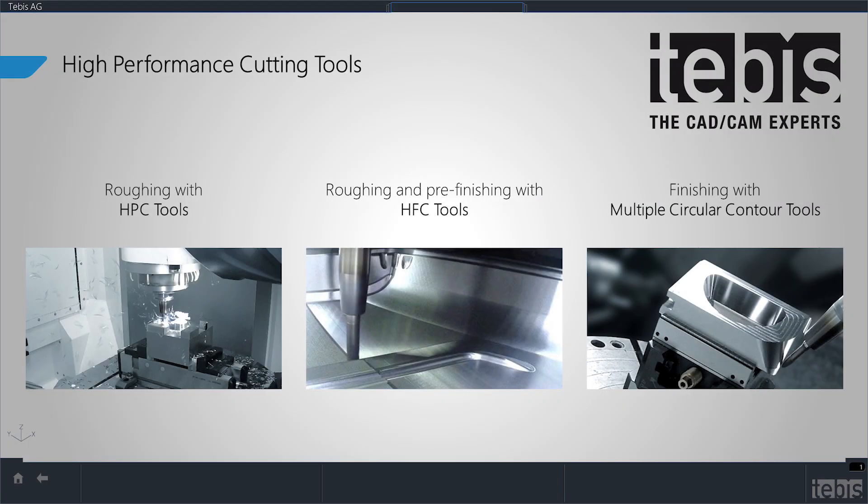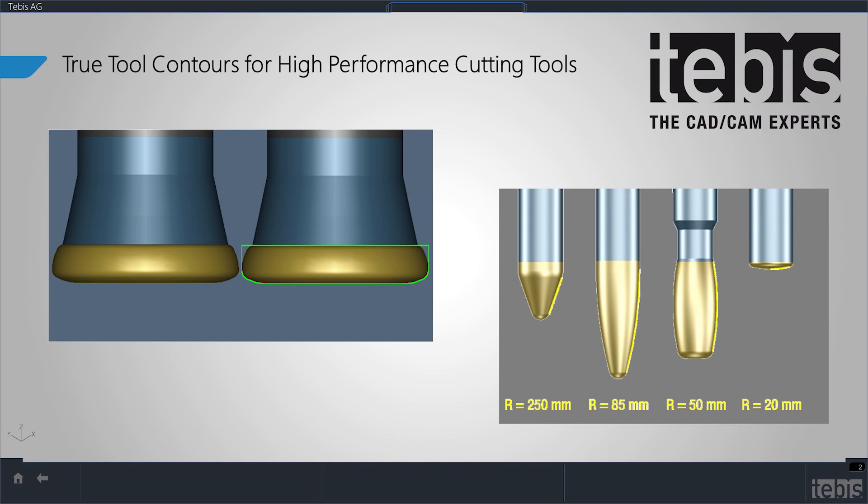And what about the precision tool geometry? Alongside our true surface technology, Tebis uses full form tool descriptions. No matter what the tool is — even barrel tools and circle segment cutters — we have a completely accurate tool description. The form of the tool is 100% accurate, which means we can create the most accurate toolpath possible.